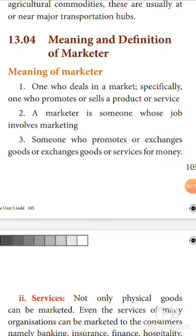In the last class we have seen the classification of market. Now we are going to see the definition of marketer. A marketer means a person who involves or promotes or sells their products or services. He undertakes so many activities for selling or purchasing their goods and services, and those activities are called marketing.